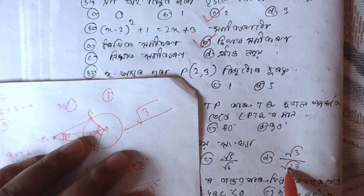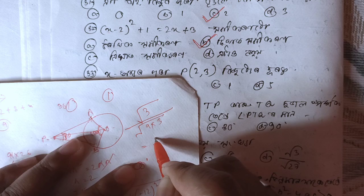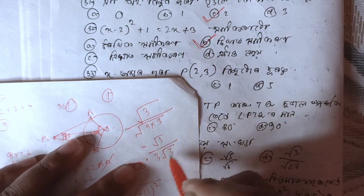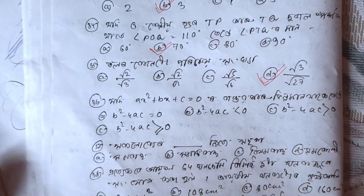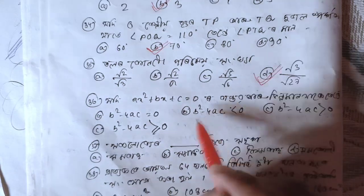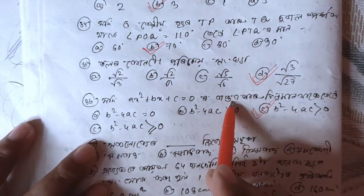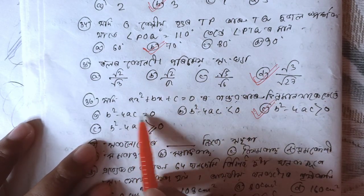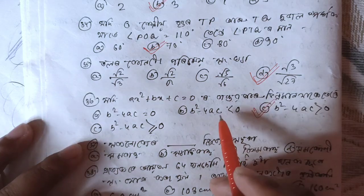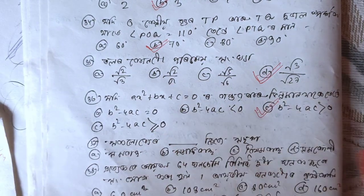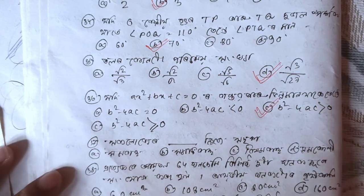Root 3: root 27 is 9 into 3, 9 into 3, so this is root 3. Root 3 cancels, giving 1 by 3. So this is the value where ax squared plus bx plus c equals 0, and the base of bx plus c equals 0 is greater than 0.